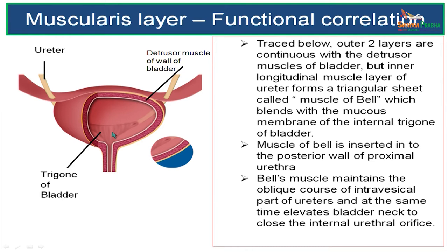Also, the muscle of Bell is inserted into the posterior wall of the proximal urethra. This is the urethra what you see in this picture. The muscle of Bell is also inserted into the proximal urethra posterior wall.